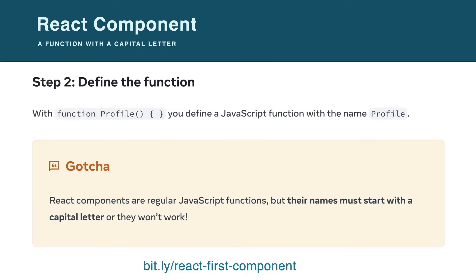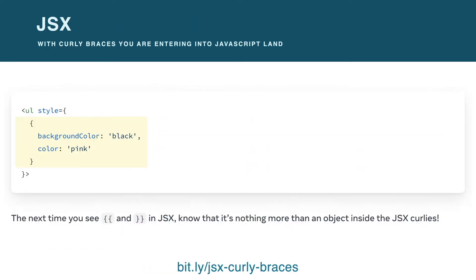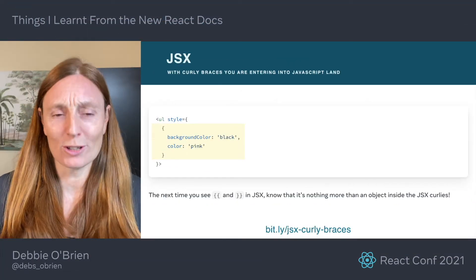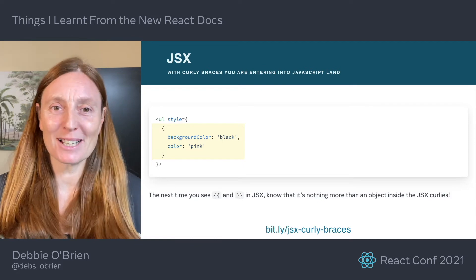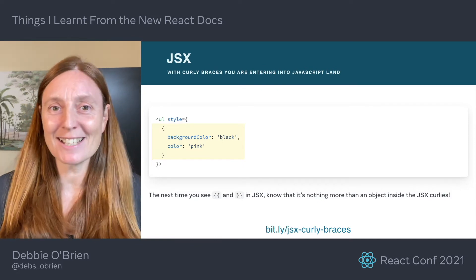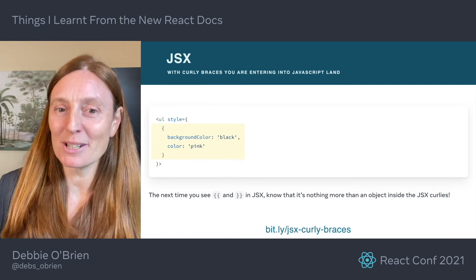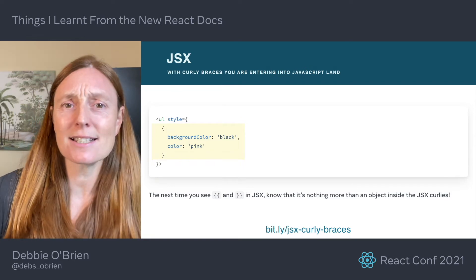I was really surprised, because I always thought React was difficult. But when I started to go through the new docs, I found things easy to understand. Simple things like: a component in React is just a function with a capital letter — that makes sense. JSX is the reverse of a template; it lets you sprinkle your JS logic with markup, and curlies let you sprinkle that markup with even more JS. When you use curly braces, you are entering into JavaScript land. This helped so much, because my fingers kept typing quotes all the time. And I had to mentally remind myself to use curly braces — entering JavaScript, curly braces. And the next time you see a double curly brace in JSX, it's nothing more than an object inside the JSX curlies.